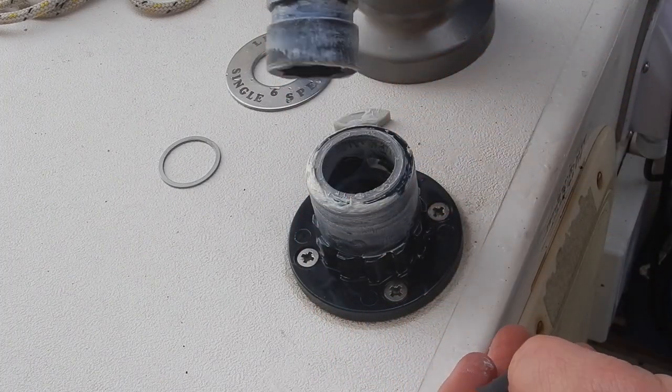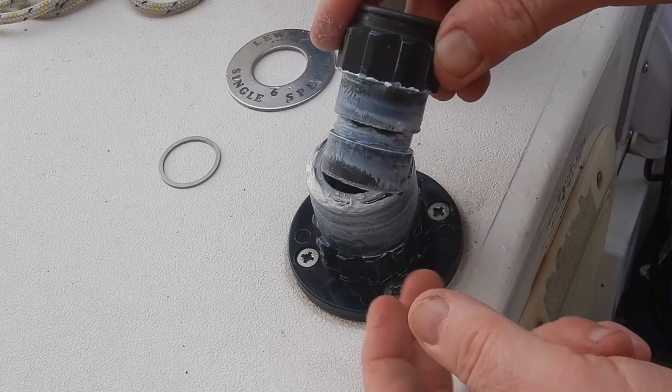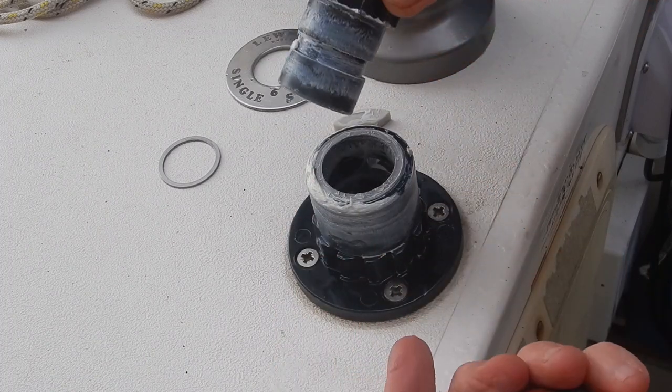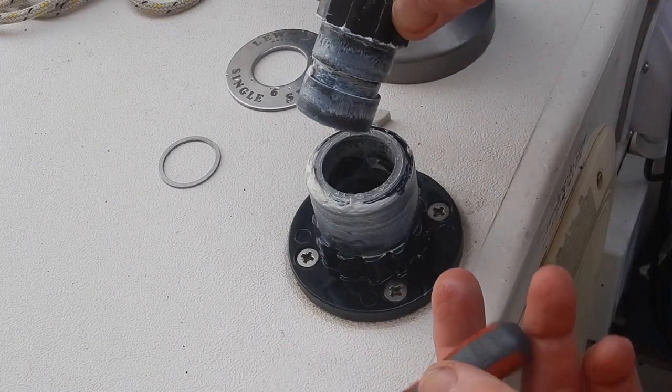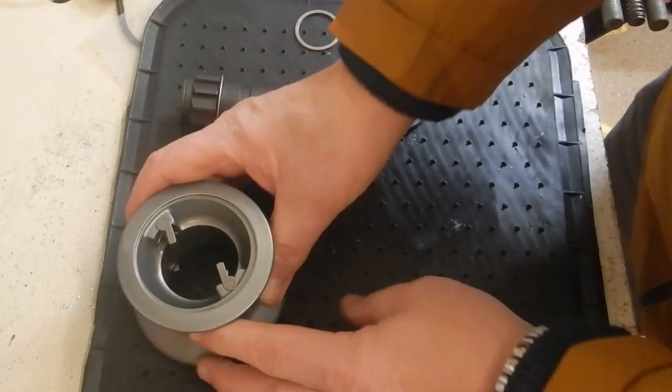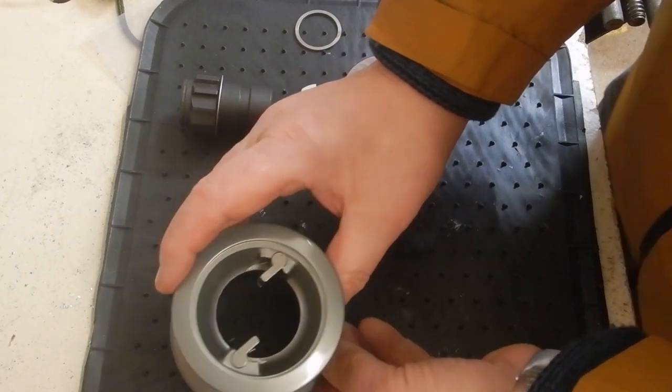That peg stops this from coming out. What you do is take all this part, clean it all up, and then put it back together.